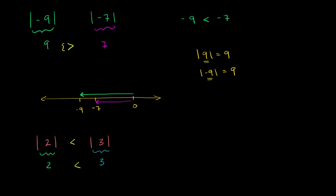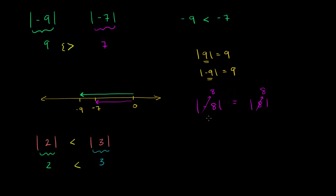Let's compare the absolute value of negative 8 to the absolute value of 8. Both are 8 away from 0 — negative 8 is 8 to the left of 0, and 8 is 8 to the right of 0. So both evaluate to 8: the absolute value of negative 8 is 8, and the absolute value of 8 is 8. Clearly, 8 is equal to 8.